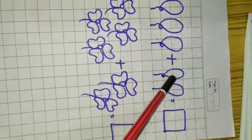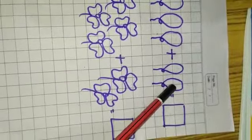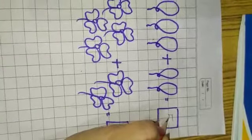Add ka sign hai. Now, one, two, three, four, five. How many balloons are there? There are five balloons. So write here, five balloons.